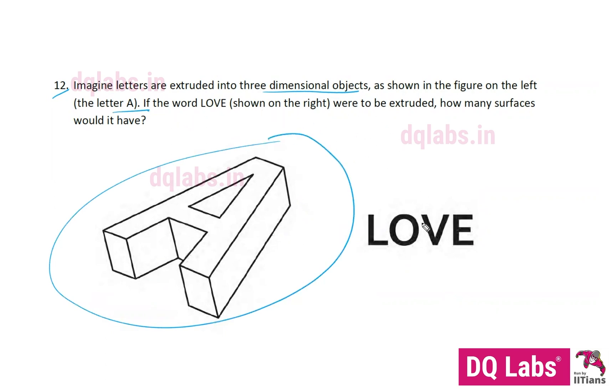If the word LOVE, shown on the right, were to be extruded, how many surfaces would it have? We should count the total number of surfaces if this was turned this way in 3D. In this manner, there are two surfaces up and down, so we can count two. There's one on top on this edge that makes a surface like this. We've counted the bottom, so two plus one.